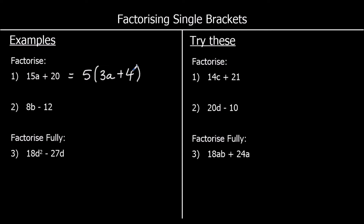5 times 4 is 20. For the second one, we want the biggest times table that 8 and 12 are both in. So we don't want to take 2 outside the brackets, because there's a bigger factor of 8 and 12. We can take 4 outside — they're both in the 4 times table. And then 4 times 2b would make 8b.